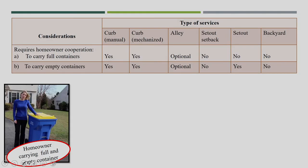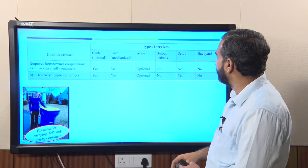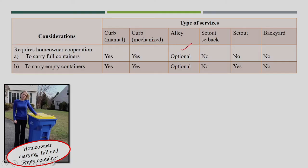Now we will compare the different considerations for these five collection services. The first consideration is required house owner cooperation. I separated curb service into two types: one where waste is manually collected into the secondary vehicle, and one where waste is mechanically unloaded into the collection vehicle. For curb services, house owner cooperation is required for carrying the full container and returning the empty container. For LA service, it is optional depending on city or country. For set-out set-back service, house owner cooperation can be considered not required, as the crew member visits and collects the waste.